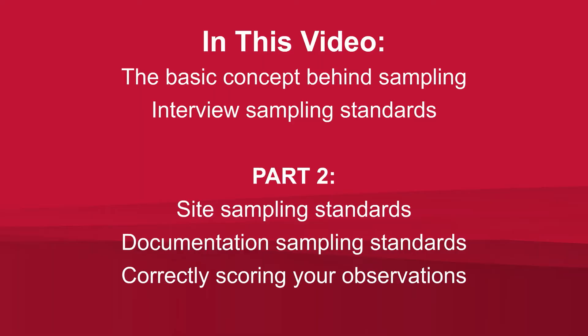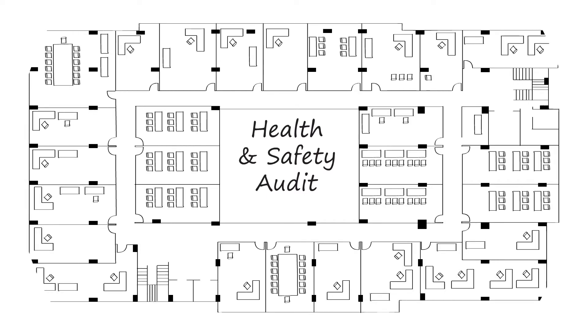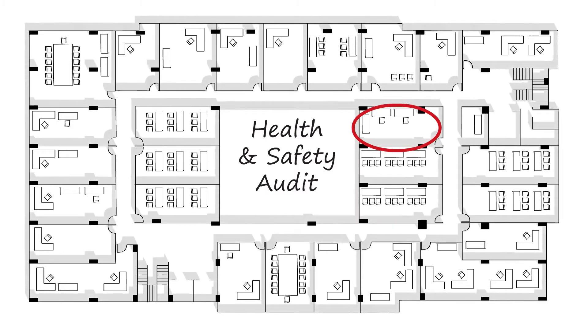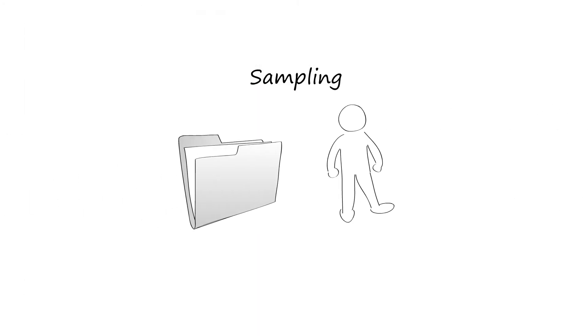Let's start with the basic concept behind sampling. When you do a health and safety audit, you can't possibly look at everything a company is doing with their health and safety management system. You want to look at enough of what they're doing to get an accurate picture of the system as a whole and how it's doing. That's where sampling comes in — when you're looking at records or interviewing employees, what counts as enough to get that accurate snapshot of the company system? To answer that, you need to understand the science of sampling.